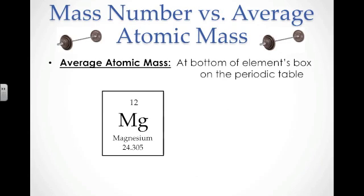When I look at the average atomic mass, for our intents and purposes right now, we only want to identify where to find it. The average atomic mass is found at the bottom of an element's box on the periodic table. We can compare those a little bit later, and we'll actually show you how to calculate this number at a later time.